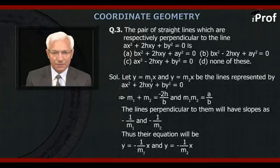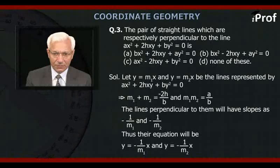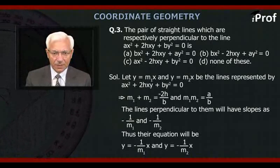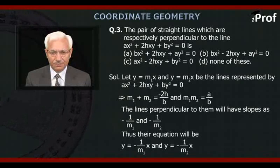The pair of straight lines which are respectively perpendicular to the lines represented by AX² + 2HXY + BY² = 0 is BX² + 2HXY + AY² = 0.